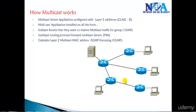In this video we will try to get into some overview on how multicast is going to work in production network scenarios. There are five different steps which generally happen whenever you want to receive multicast traffic. We will see a quick overview of these things.